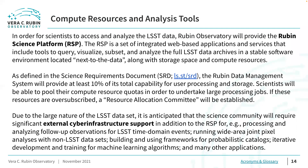In order for scientists to access and analyze the LSST data, Rubin Observatory will provide the Rubin Science Platform, the RSP. The RSP is a set of integrated web-based applications and services running at the Rubin Observatory Data Access Centers, the DACs, which will include tools to query, visualize, subset, and analyze the full LSST data archives in a stable software environment located next to the data, with storage space and compute resources. As defined in the science requirements document, the Rubin Data Management System will provide at least 10% of its total capacity for user processing and storage.